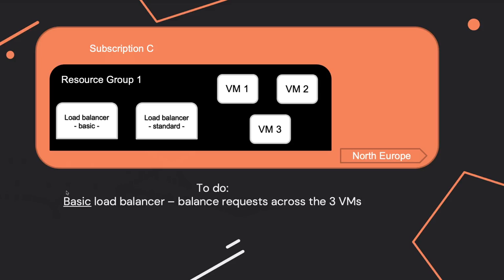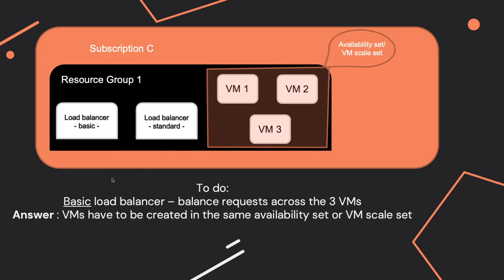In this case we have the same load balancers — the basic one and the standard one — along with three VMs. The question you can expect is: to balance requests across the three VMs using the basic load balancer, what do you need? Keep in mind this is for the basic one. For the basic load balancer, you need to have the three VMs in the same availability set or the same virtual machine scale set.